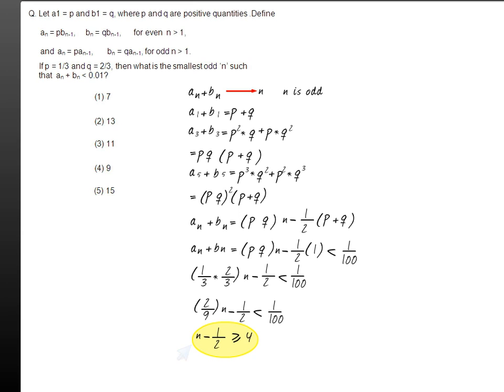Hence for this to happen, n must be greater than or equal to 9. Hence the smallest value of n would be 9.